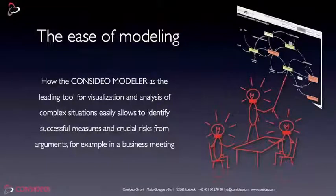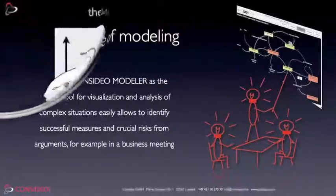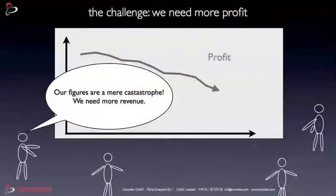Almost every day we face complex challenges where we have to decide what measures ought to be successful and where we have to foresee possible risks. To show you how easy that becomes with the Considio modeler, I'd like to demonstrate how to visualize and analyze the arguments of a business meeting. In that meeting, four managers discuss how to increase the profit.